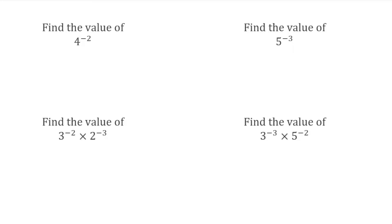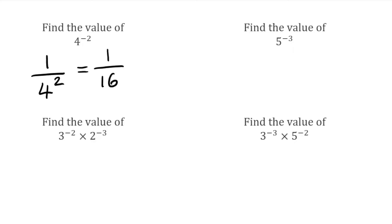For this first question, we've got 4 to the power of negative 2. We see that negative power, so we know it's going to be a reciprocal — first thing we write is 1 over, then 4 to the positive power of 2. So we have 1 over 4 squared; 4 squared is 16, so our final answer would be 1 over 16.